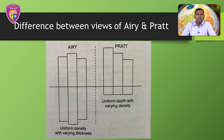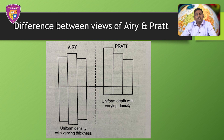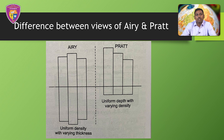Let us now see the differences between the views of Airy and Pratt. Airy talked about the law of flotation and proposed uniform density with varying depth. Pratt gave the concept of the law of compensation and said that higher the column, lesser the density, and smaller the column, greater the density. He also proposed uniform depth with varying density. Thank you. Happy learning.